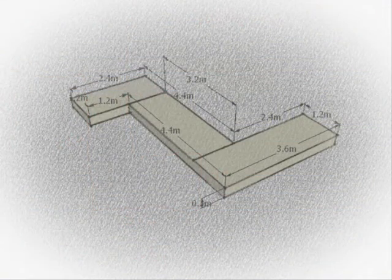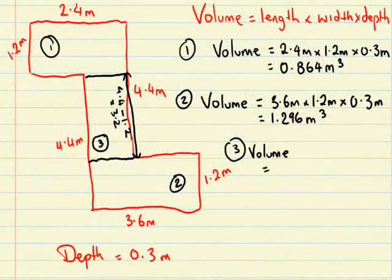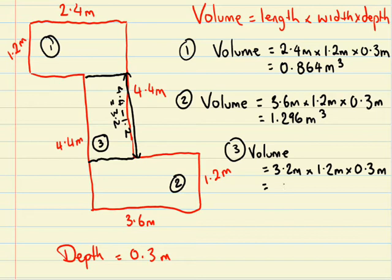So that gives us that little rectangle we are going to work out in the middle there. That measures 3.2 by 1.2 by 0.3 metres. Multiply this together we get 1.152 metres cubed.